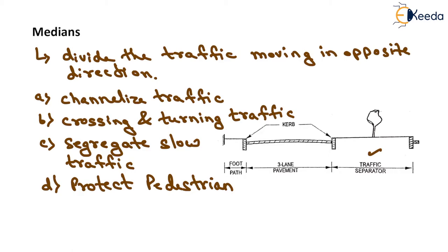It is desirable to provide a wide median traffic separator of 8 to 14 meter width so that future widening of the carriageway towards the median is possible. However, the width should be decided based on availability of land and its cost. A minimum of 6 meter width is required to reduce headlight glare from vehicles moving in opposite directions at night. Providing a minimum width of 6 meter for the traffic separator reduces the glare effect from oncoming vehicles, thereby reducing accidents. The glare can also be reduced in narrower strips by planting shrubs.